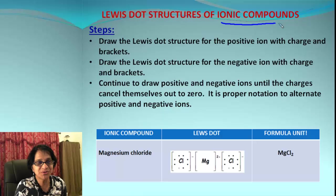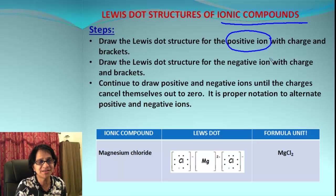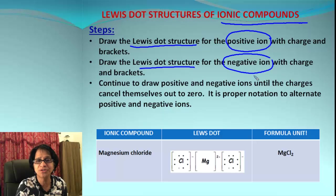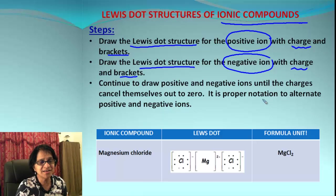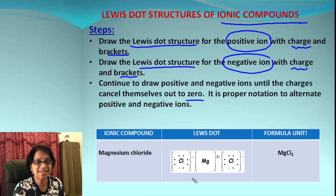Now that we know how to draw Lewis dot structures for atoms and ions, it will be very easy to draw one for ionic compounds. Each ionic compound will have positive and negative ions. The steps include drawing Lewis dot structures for both positive and negative ions along with their charges — don't forget the brackets. After that, we must make sure the total charge on the compound is zero.